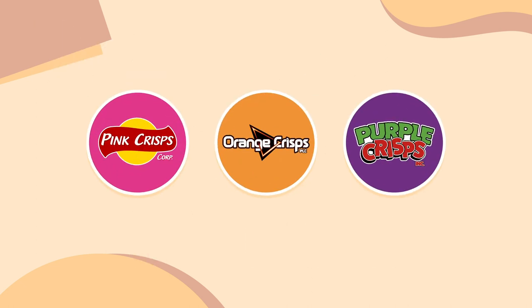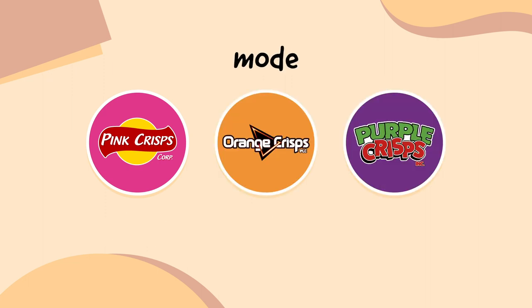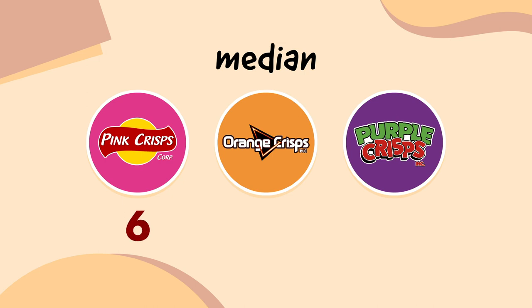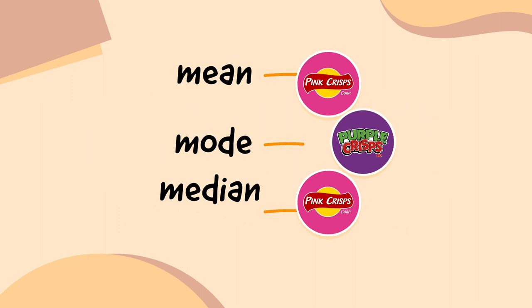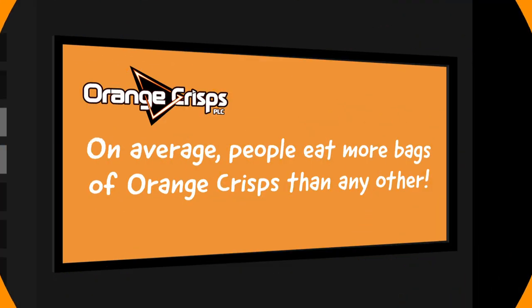We have all the information we need to crack the case. The mean of Pink Crisps is 6.8 bags, Orange Crisps is 6.2 bags, and Purple Crisps is 5 bags — so Pink Crisps Corp wins for the mean. The mode of Pink Crisps is 3, Orange Crisps is 3, and Purple Crisps is 4 — so Purple Crisps Inc has the highest mode. The median of Pink Crisps is 6, Orange Crisps is 3, and Purple Crisps is 4 — so Pink Crisps Corp wins for the median. Orange Crisps PLC are misleading us. That's another case closed.